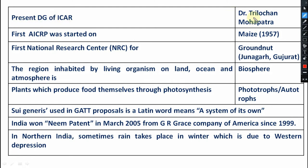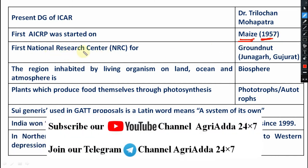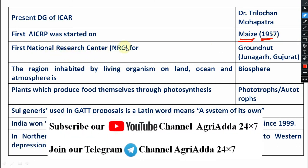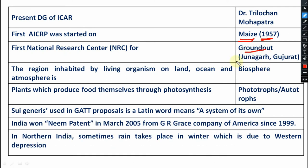Present Director General of ICAR is Dr. Trilochan Mohapatra. The first AICRP — All India Coordinated Research Project — was started for maize in the year 1957. The first NRC — National Research Centre — was started for the crop groundnut.